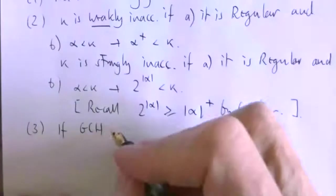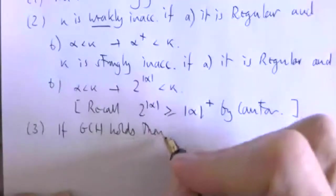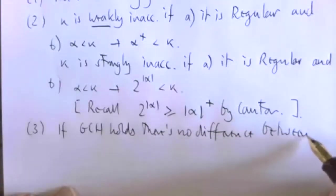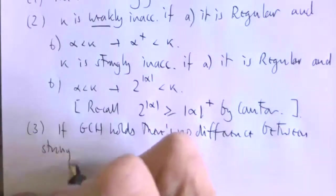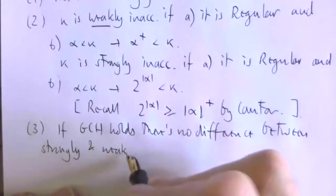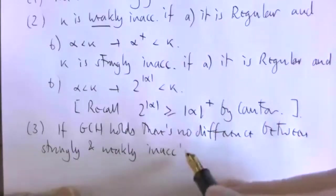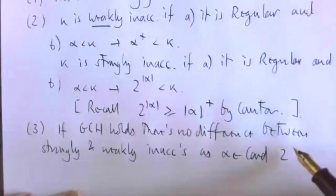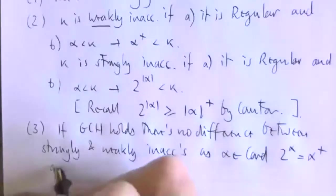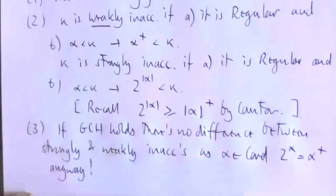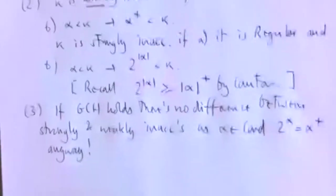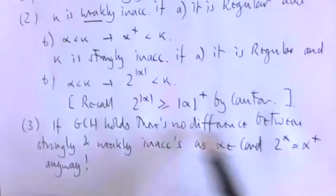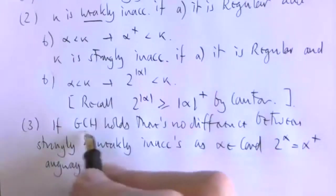So if the GCH holds, there's no difference between strongly and weakly inaccessibles, because then if alpha is a cardinal, 2 to the alpha equals alpha+ anyway. So the condition that alpha+ is less than kappa is the same as the condition that 2 to the alpha is less than kappa.